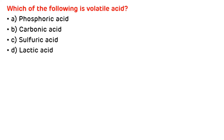MCQ 5: Which of the following is a volatile acid? Options: phosphoric acid, carbonic acid, sulfuric acid, lactic acid. The correct answer is carbonic acid, as it is the one example of a volatile acid.